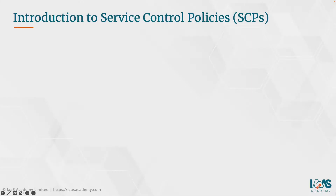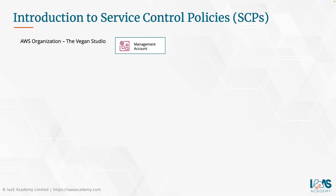We will be building an AWS organization as part of our lab exercise, covering the Vacant Studio scenario presented in section one of this course. This particular organization is going to have at least two accounts — the management account and the development account. As explained in previous lectures, you would typically have a vast number of accounts for different use cases, but for the purposes of the lab we just need these two accounts for now.